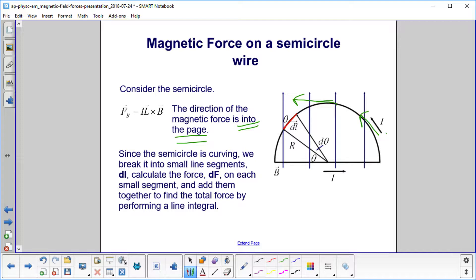Now, the semicircle is curving, okay? So we're going to break it into small line segments, DL, calculate the force on each small segment, and then add them together to find the total force by performing a line integral.